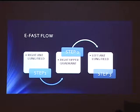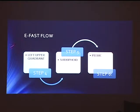So the flow for eFAST is: step one — right anterior lung; step two — right upper quadrant; step three — left anterior lung; step four — left upper quadrant; step five — sub-xiphoid; step six — suprapubic pelvic view.